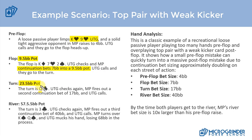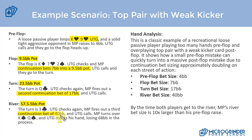The pot is now 23.5 big blinds. The turn is the queen of clubs. Under the gun checks again with top pair, nine kicker. Middle position fires a second continuation bet of seventeen big blinds, and under the gun calls again. On the river the pot is 57.5 big blinds. A three of clubs falls — a relative blank. Under the gun checks, middle position fires a third continuation bet of forty big blinds, under the gun calls, and middle position turns over king-queen of spades. Under the gun mucks and loses 68 big blinds.